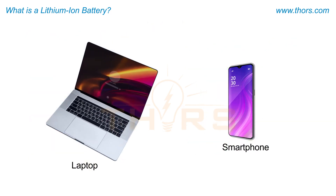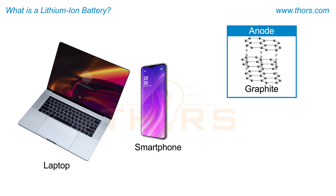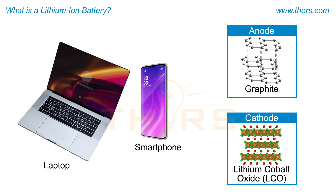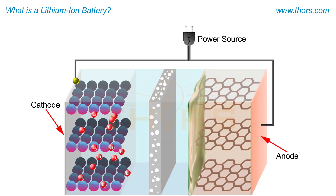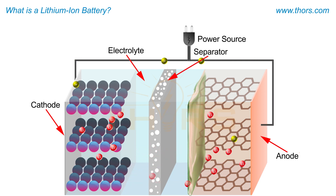Common electronic devices such as laptops and smartphones use the combination of a graphite anode with a lithium cobalt oxide (LCO) cathode. The electrolyte acts as a medium for the movement of lithium ions, and the separator is a membrane that prevents physical contact between the electrodes.